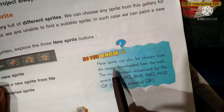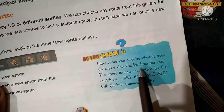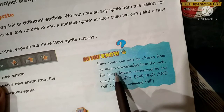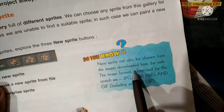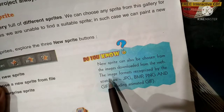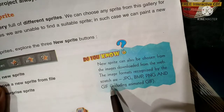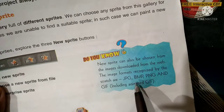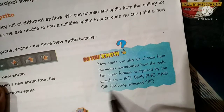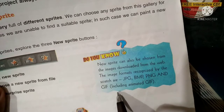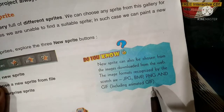A new sprite can also be chosen from an image downloaded from the web. The image formats recognized by Scratch are JPG, BMP, PNG, and GIF, including animated GIF.